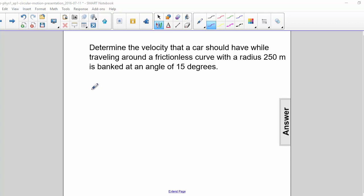Determine the velocity that a car should have while traveling around a frictionless curve with a radius of 250 meters and is banked at an angle of 15 degrees.